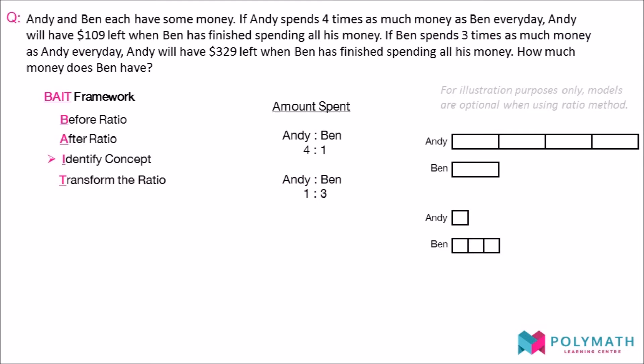After both ratios have been written down, we proceed to identify the concept of the question. Since in both scenarios Ben would have spent all his money, the amount he spends should be the same. Thus, the one unit in the first ratio should be the same as the three units in the second ratio. As they are not the same currently, we transform the ratios to make Ben's portion the same.